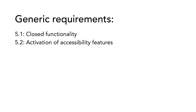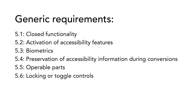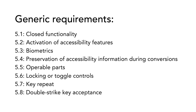There are a total of nine subsections in this chapter. 5.1 is closed functionality. 5.2 has to do with activation of accessibility features. 5.3 is biometrics. 5.4 covers the preservation of accessibility information during conversions. 5.5 has to do with operable parts. 5.6 is locking or toggle controls. 5.7 is key repeat. 5.8 covers double-strike key acceptance. And in 5.9 we learn about simultaneous user actions.